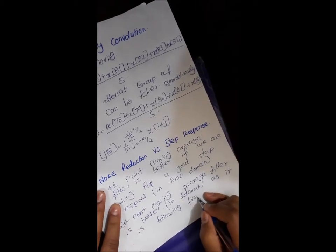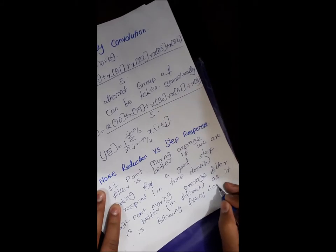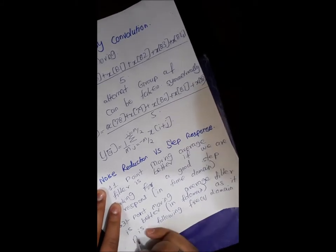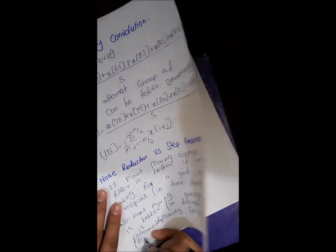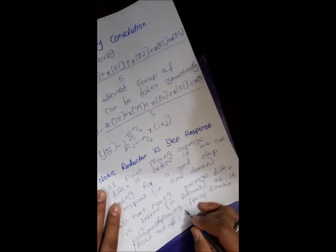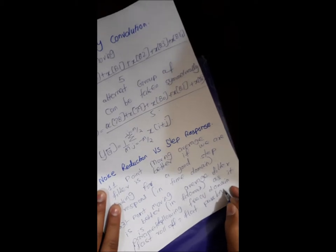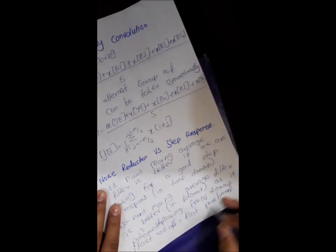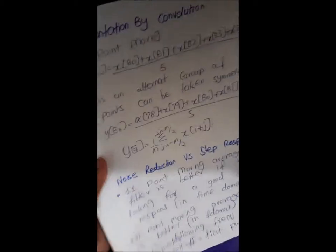In time domain. But if 31 point moving average filter is better in frequency domain as it is following frequency domain parameters, you need fast roll off, flat pass band, so resultantly there will be good stop band attenuation.